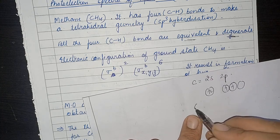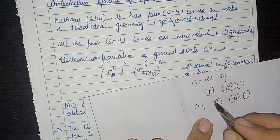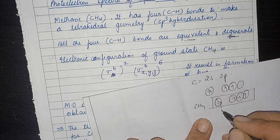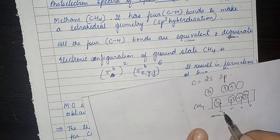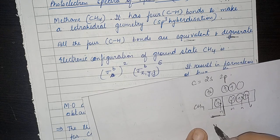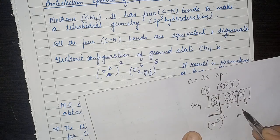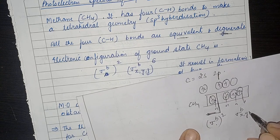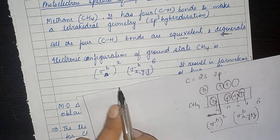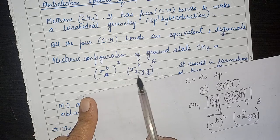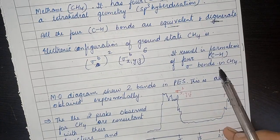Carbon's outer electronic configuration is 2s² 2p². In the formation of methane, these electrons become singly filled through hybridization and combine with one electron from each hydrogen. The 2s orbital contributes to σb², and the px, py, pz orbitals contribute to σxyz bonding with 6 electrons. This gives the electronic configuration σb² σxyz⁶, resulting in the formation of four C-H bonds in the CH₄ molecule.